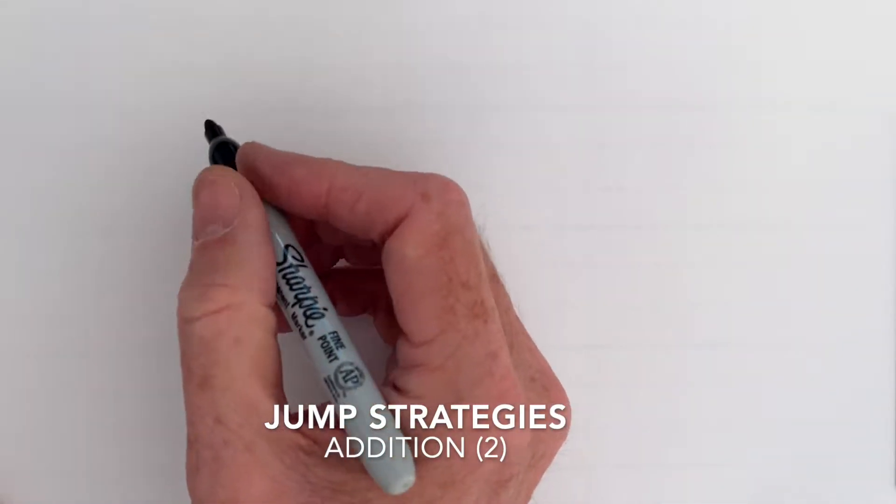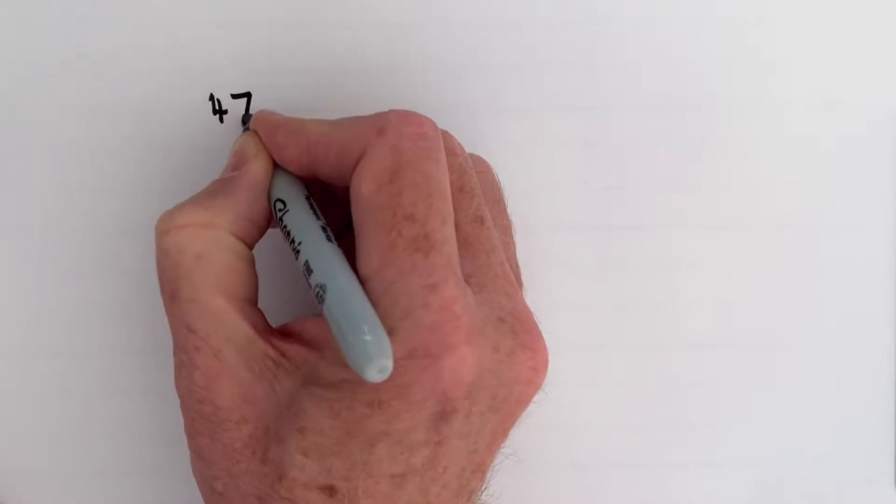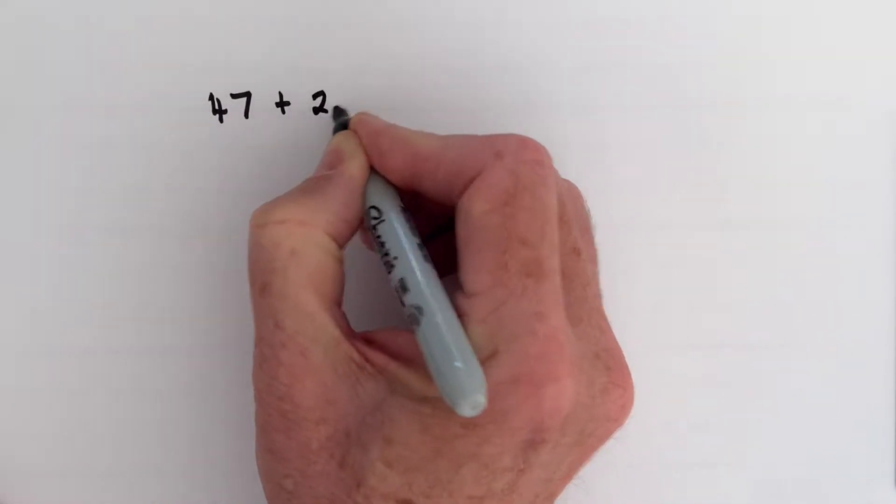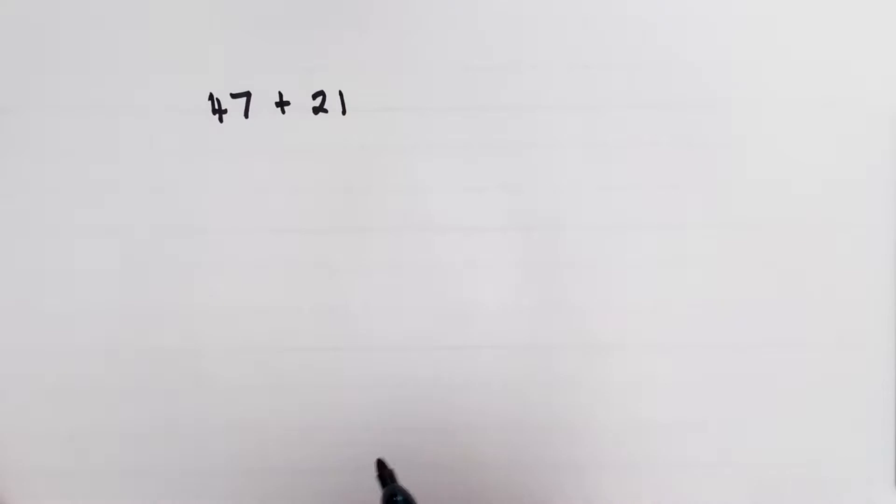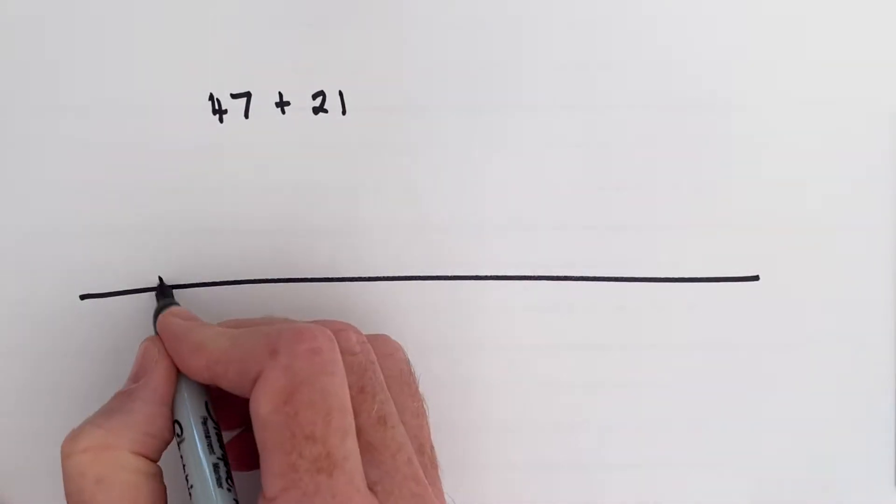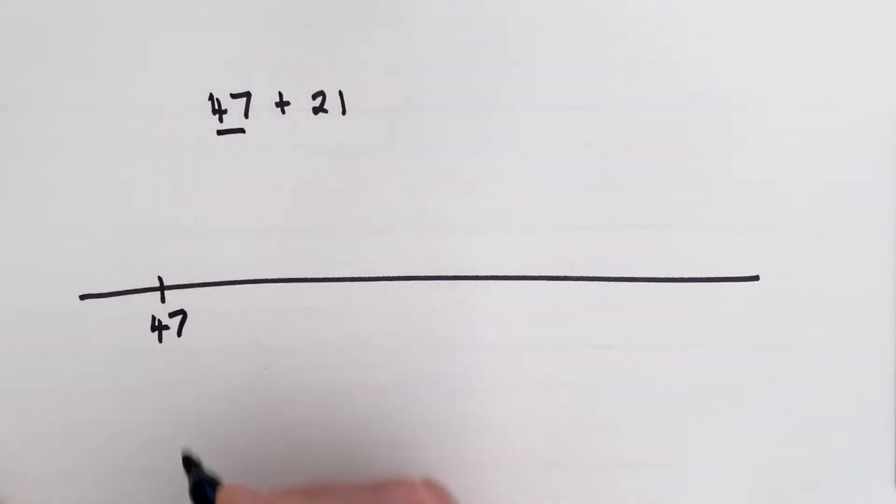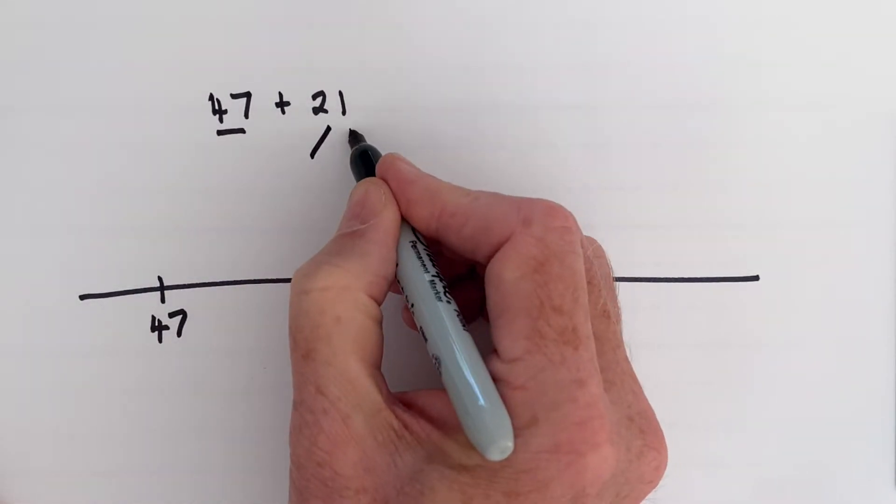We can use the jump strategy to add numbers in the 20s, so let's look at 47 plus 21. As always, we start by drawing an empty number line, plotting the first number, plotting the 47, and breaking down the second number.